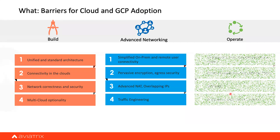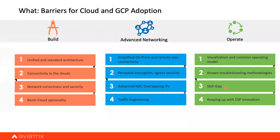The third challenge is operations. Once you've built something and provided advanced networking, you need to run and monitor it properly — observations, monitoring, and automation. You can't retrain all employees to learn all these clouds. The tools used in the on-prem world — ping, traceroute, packet capture — need to be available in the cloud as well. These are the three main areas I see when it comes to cloud or GCP adoption.